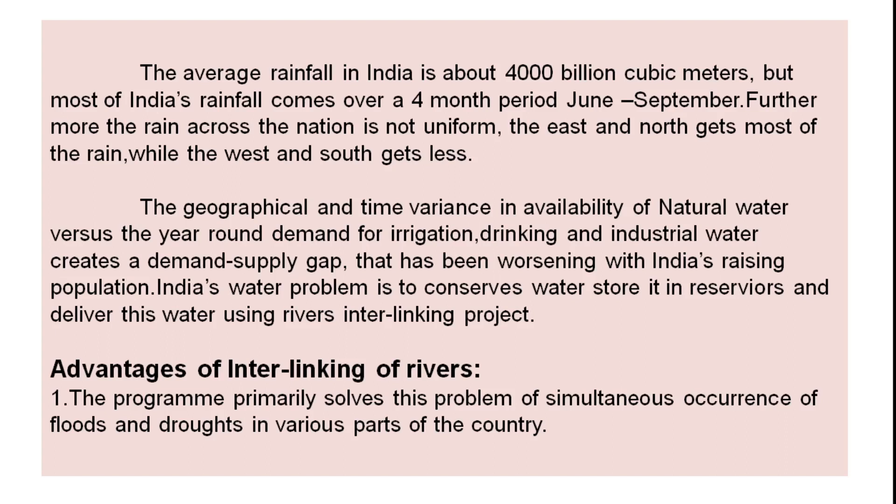The average rainfall in India is about 4,000 million cubic meters, but most of India's rainfall comes over a four-month period, that is June to September. Furthermore, the rain across the nation is not uniform — the east and north gets most of the rain and the west and south gets less.